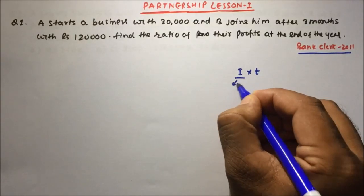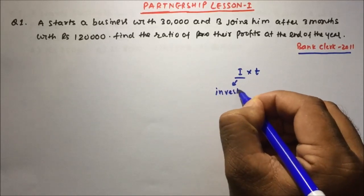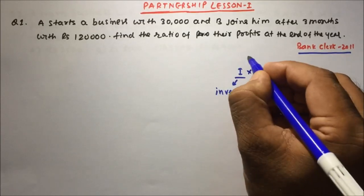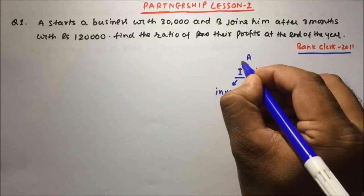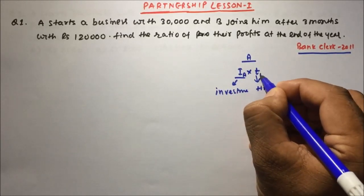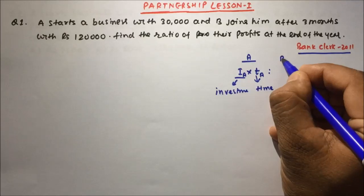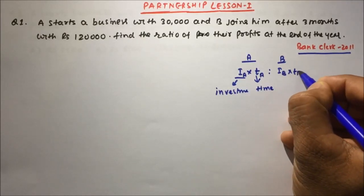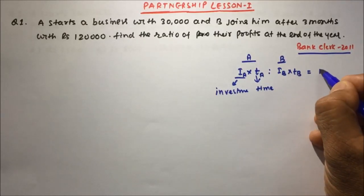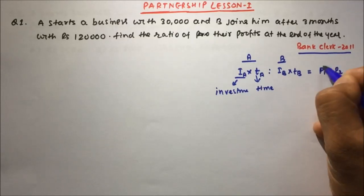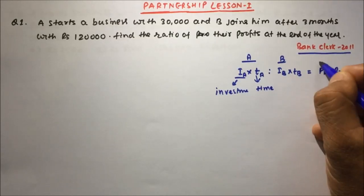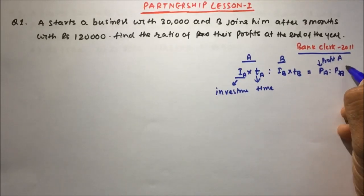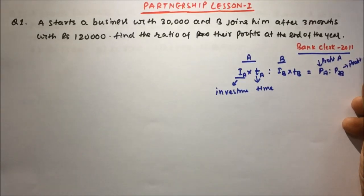The concept behind this is investment and time. Suppose investment and time by A, and investment and time by B, will give us P1 : P2, or Pa : Pb — this is the profit of A and this is the profit of B.